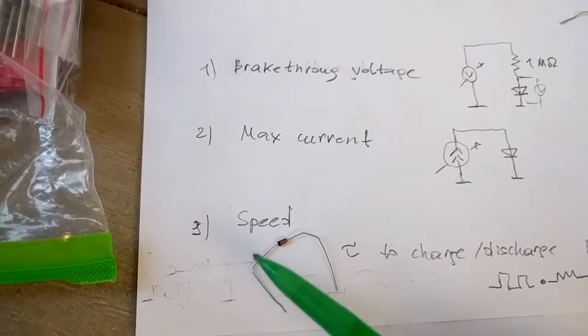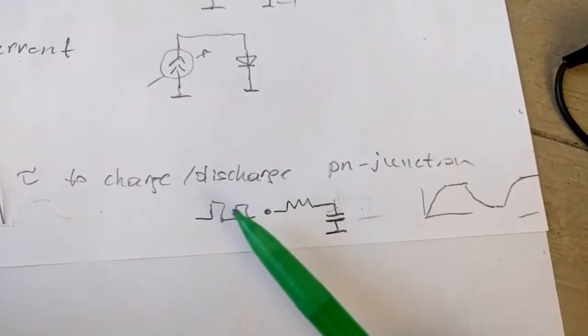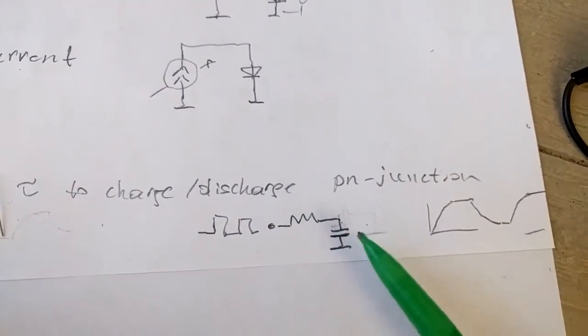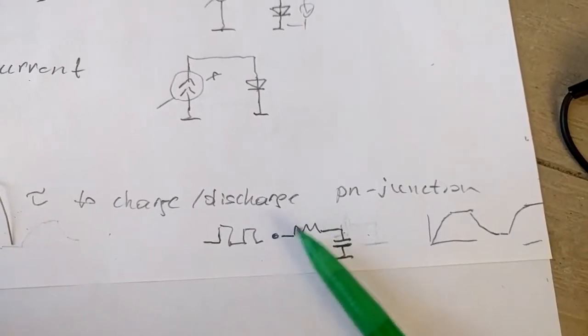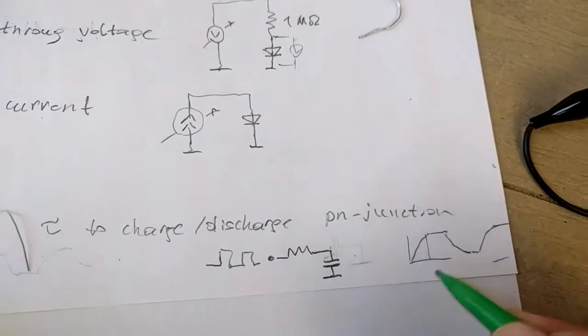I can try to charge it with very small current and then measure the time when the charge is complete. So I use square pulses, submit the pulses to the capacitor, to the diode through the resistor, and see the waveform. And I can measure this time.